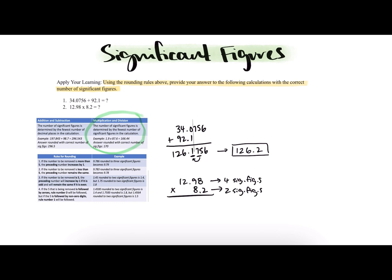Since 8.2 has the smallest number of sig figs, we want to maintain two sig figs in our product. Multiplying this out, we get 106.436. Since we want only two significant figures, we need to round off after the 1 and the 0. The 6 rounds up the zero, and since 6 is greater than 5, the preceding number increases by one, giving us 110 as our answer.